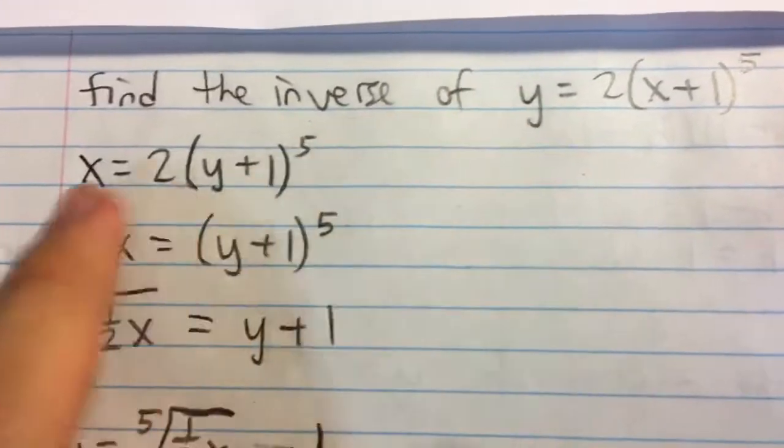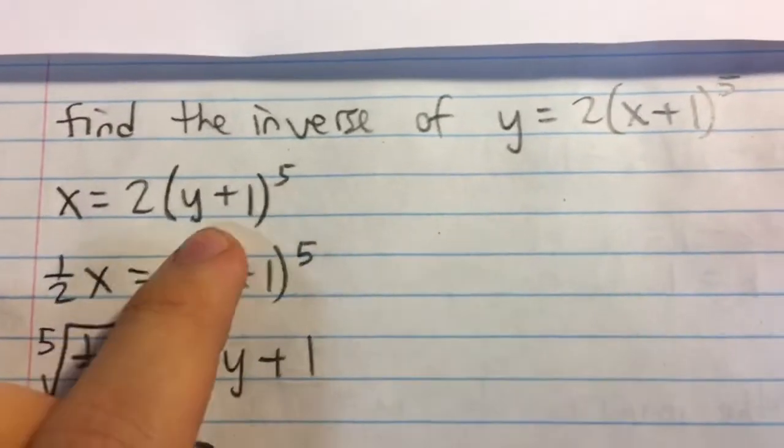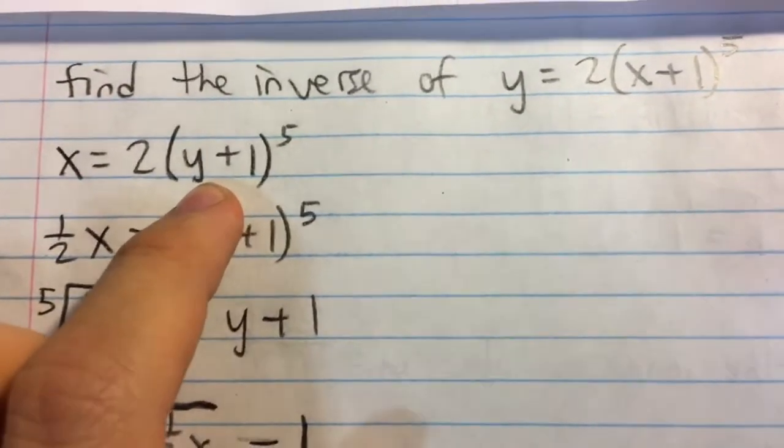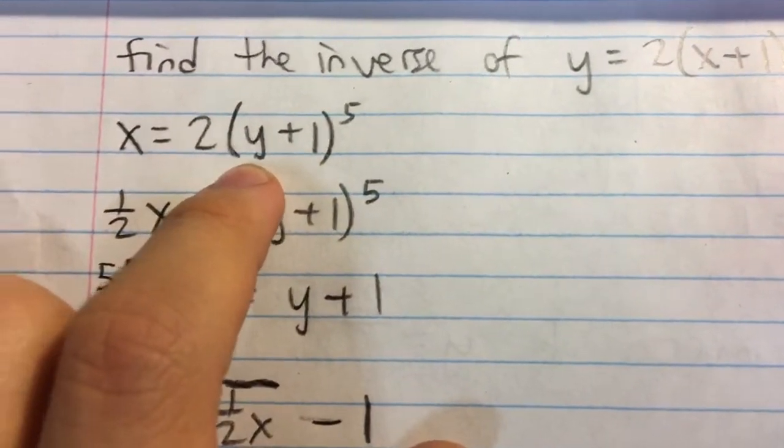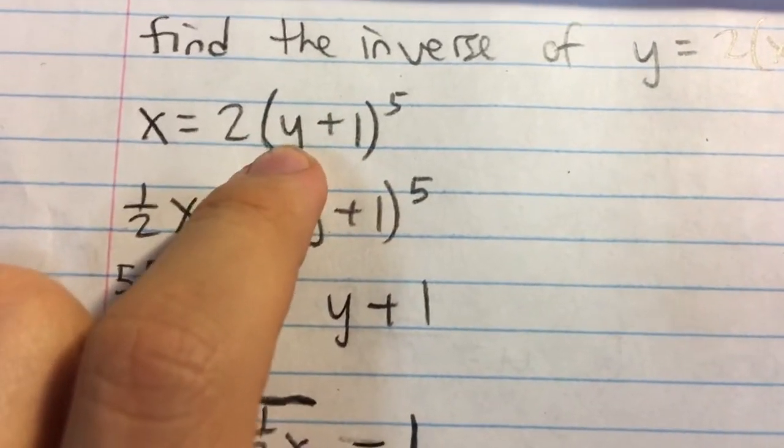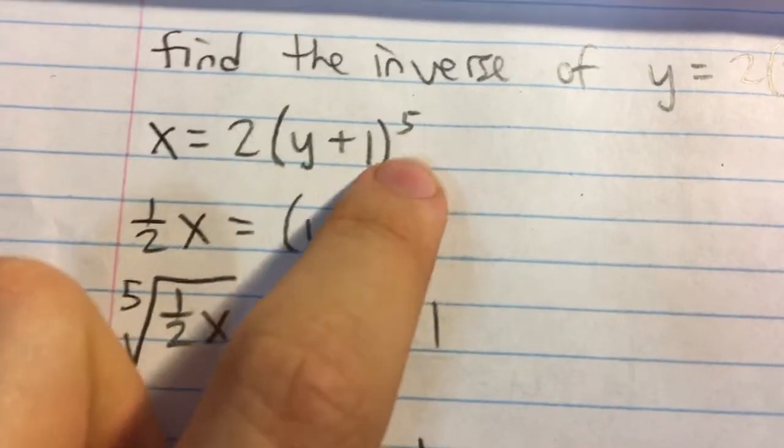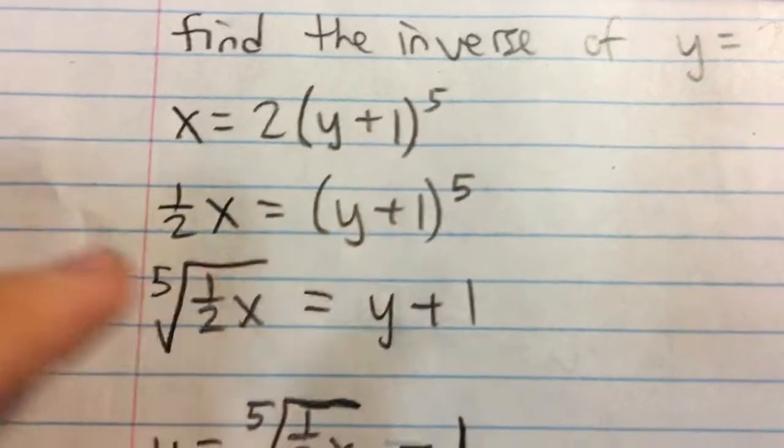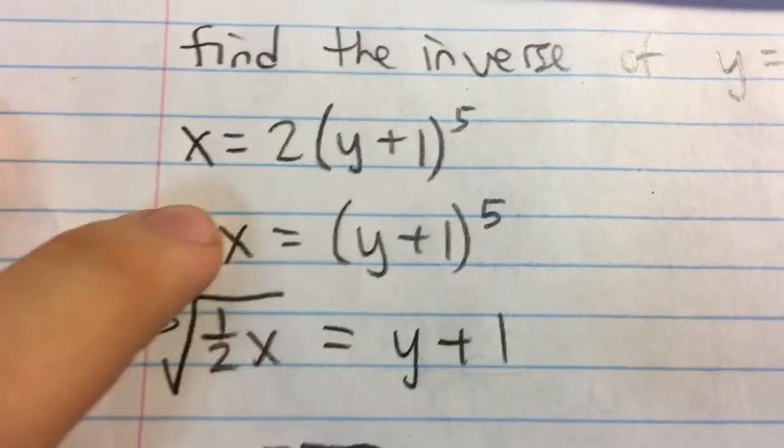And so every time we see y, we're going to replace it with x. Every time we see x, we're going to replace it with y. And so now to find the inverse function, we're going to solve for y. So this is kind of a little bit interesting because we have a fifth power, and so we're going to be taking the fifth root in this.